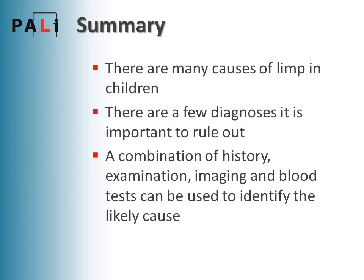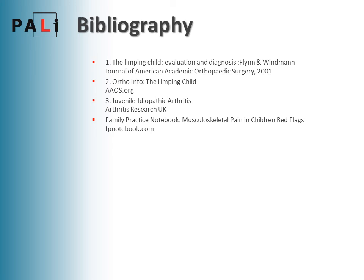In summary, there are many causes of limp in children, with a few important diagnoses to rule out. A combination of history, examination, imaging, and blood tests can identify the likely cause. As a side note — not about limping children specifically — but if you see a long bone fracture in a child who isn't walking, you must suspect abuse until proven otherwise. Thanks very much for listening.